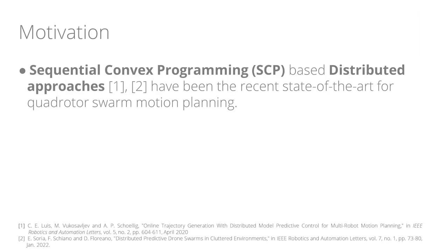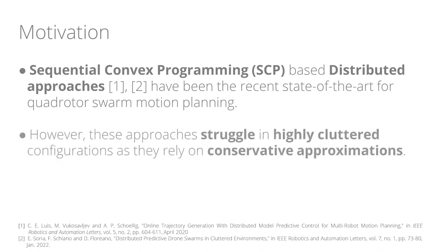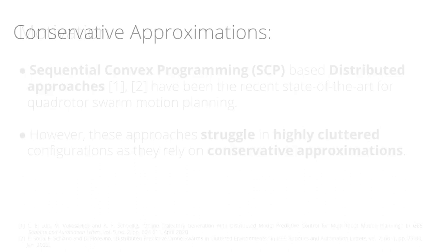Sequential convex programming based distributed approaches have been the recent state-of-the-art for corridor swarm motion planning. However, these approaches struggle in highly cluttered configurations as they rely on conservative approximations.